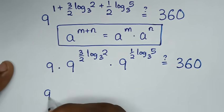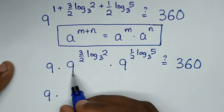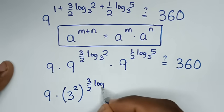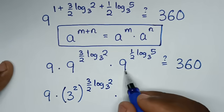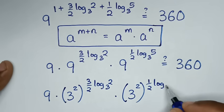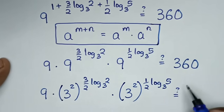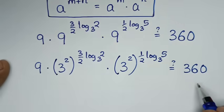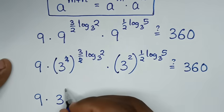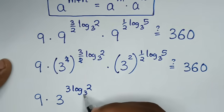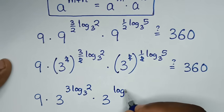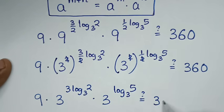Then in the next step, it will be 9 times — 9 is the same as 3 squared — bracket to the power of 3 over 2 log of 2 base 3, times 9 — 9 is the same as 3 squared — bracket to the power of a half log of 5 base 3. Is it equal to 360? So it will be 9 times 3 power of 3 log of 2 base 3, times 3 power of log of 5 base 3. Is it equal to 360?